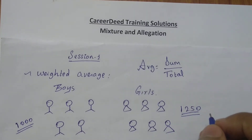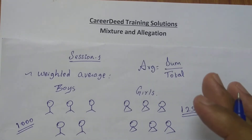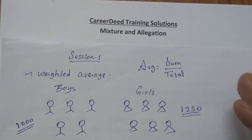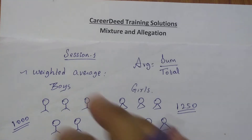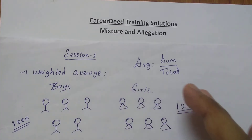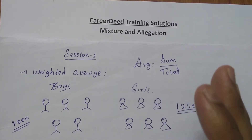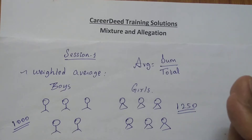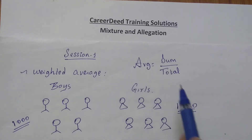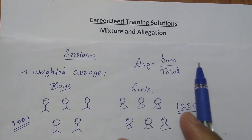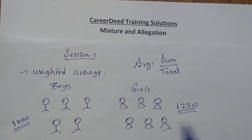Now I have to find the total average amount spent by the entire class on food. To find the total average, I have to use the average of boys as well as the average of girls to find the total sum spent by both boys and girls, then divide by the total number of people in the class.